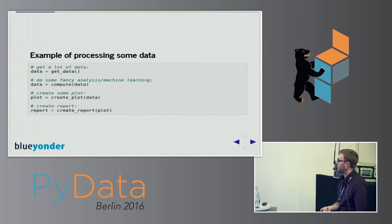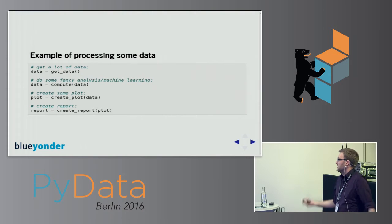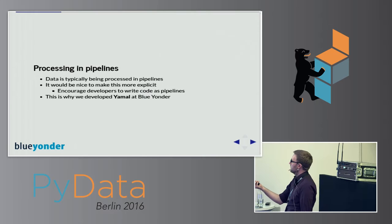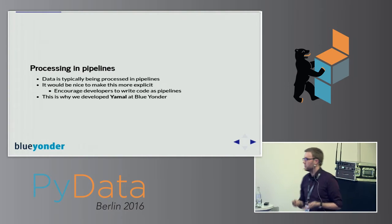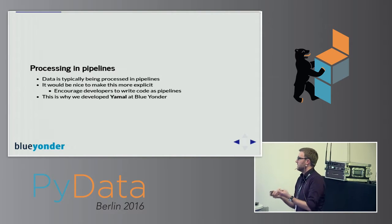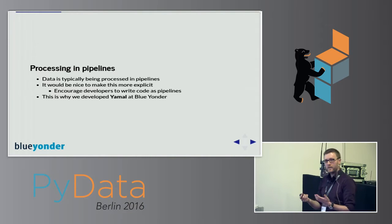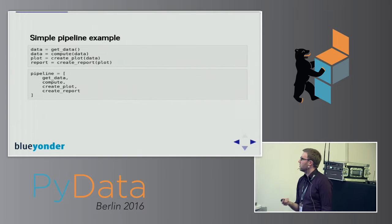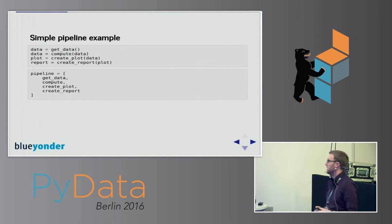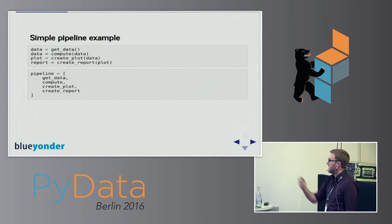Here's the same example — we get some data first, do some computation, create a plot, and create a report in plain Python code. That works fine, but it would be nice to make this more explicit and abstract away what we really want to do. We also want to encourage developers to write code as pipelines. In Yamal, a pipeline is basically just a list with a couple of functions in it — nothing fancy.